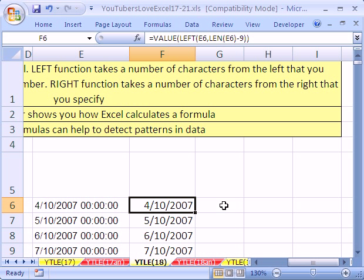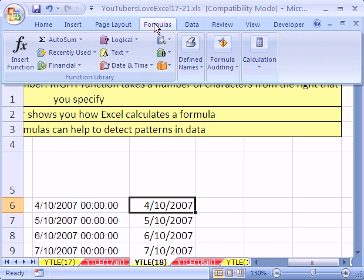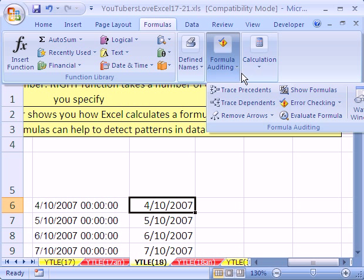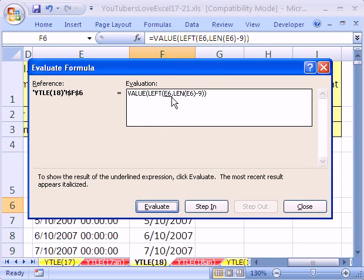With that cell selected, I want to invoke formula evaluator. It's one of the coolest things. Before we had formula evaluator, I don't know what we did. We did a lot of F9ing. Here it is, formula auditing, evaluate formula. In 2003, it's tools, formula auditing, and then evaluate formula. Let's see how it examines this.